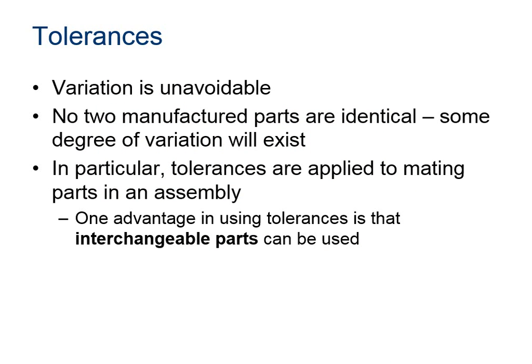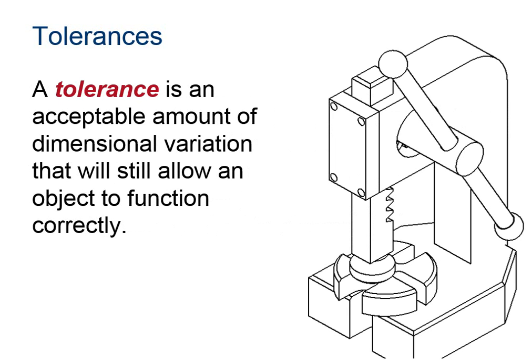Tolerances are used in production drawings to control the manufacturing process and control the variation between copies of the same part. An acceptable amount of variation must be determined. Acceptable variations allow the part to be off a little from the dimension on the blueprint, but still function within the assembly.